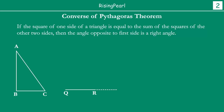First we will do a construction. We have our triangle ABC which is given to us, and it is given that AC² = AB² + BC². What we do is draw a straight line and we measure a length QR. One end we call Q, and we measure length QR such that QR is equal to BC. We measure QR equal to BC by construction.